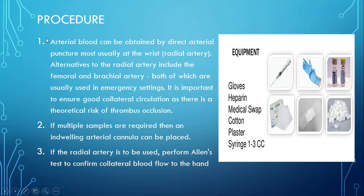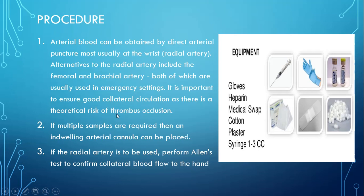Arterial blood can be obtained either by direct arterial puncture, mostly done at the wrist from the radial artery. Alternatives to the radial artery are the femoral artery and brachial artery, but these are used in emergency settings. It is important to ensure good collateral circulation, as there is a theoretical risk of thrombus occlusion. If multiple samples are required, an indwelling arterial cannula can be placed.